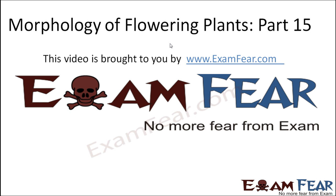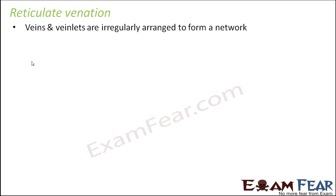Hello friends, this video on morphology of flowering plants part 15 is brought to you by exampear.com. So what is reticulate venation? Veins and veinlets are irregularly arranged to form a network. On the leaf blade, these veins and veinlets are present haphazardly — not in a specific pattern. It is generally seen in dicotyledonous plants.